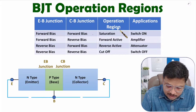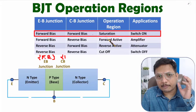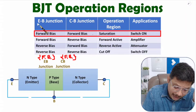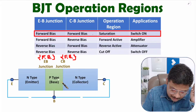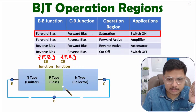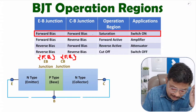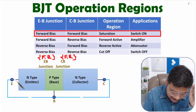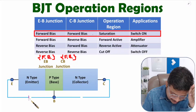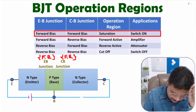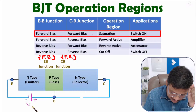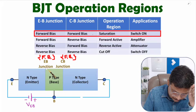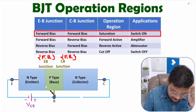Let us talk about the first operational region: saturation. To keep BJT in the saturation region, the emitter-base and collector-base junctions should both be in forward bias. To keep the emitter-base junction in forward bias, the N type should be connected with the negative terminal of the battery and the P type with the positive terminal. This voltage is VEB, and with VEB we keep this emitter-base junction in forward bias.